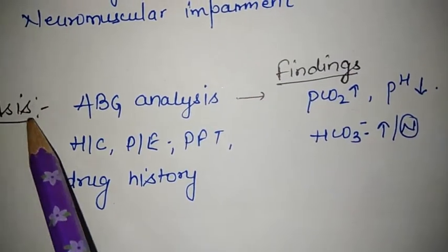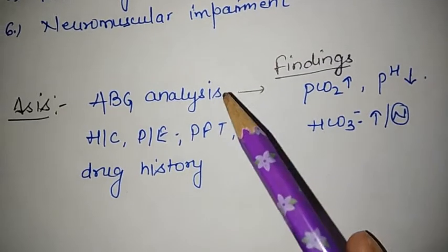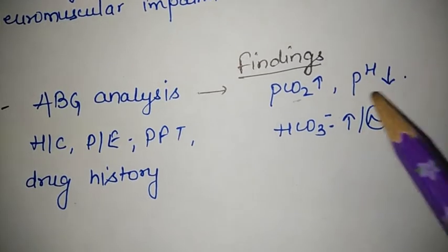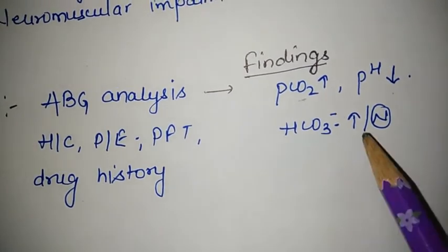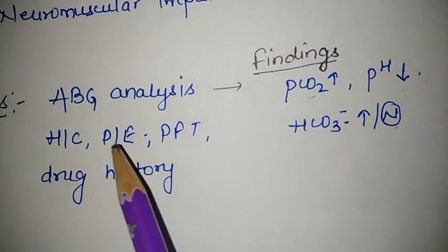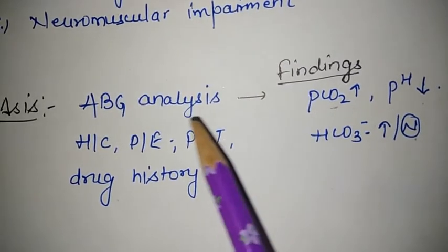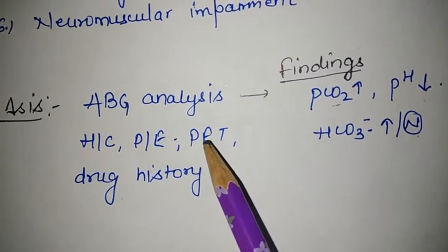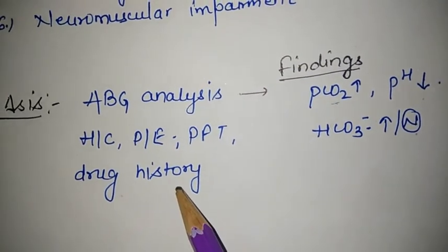To diagnose respiratory acidosis: ABG analysis will show increased partial pressure of carbon dioxide, decreased pH, and bicarbonate that may be increased or normal. History collection and physical examination are also performed. Pulmonary function tests are done because alveolar ventilation is impaired, so tidal volume and lung capacities will be decreased. Drug history should also be obtained from the patient.